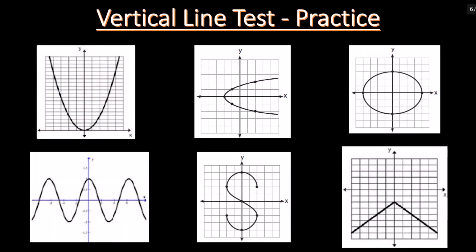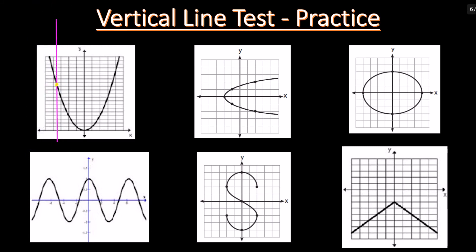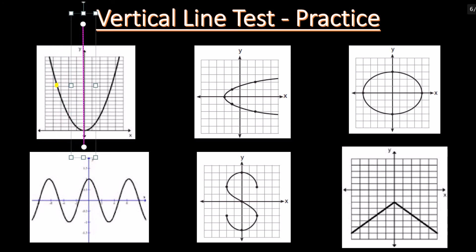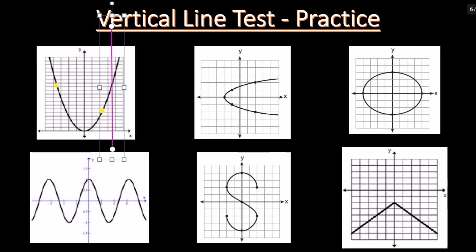Let's apply the vertical line test to some practice. First, draw a vertical line parallel to the y-axis, then move it from left to right and see how many intersections it has. Along this graph, it has one intersection. Continuing to move the vertical line to the right, the graph and the vertical line only have one intersection for any value of x, so it's a function.